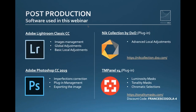Regarding software, we'll use Adobe Lightroom as the primary post-production software, then Adobe Photoshop and a couple of plugins. One is called Nik Collection, which you can find at the link shown here, and the other is TM Panel, also linked here — there's even a discount code if you're interested in purchasing it. The idea is to use Lightroom for basic management and adjustments, then move to these plugins for more advanced local adjustment and greater control over the image.